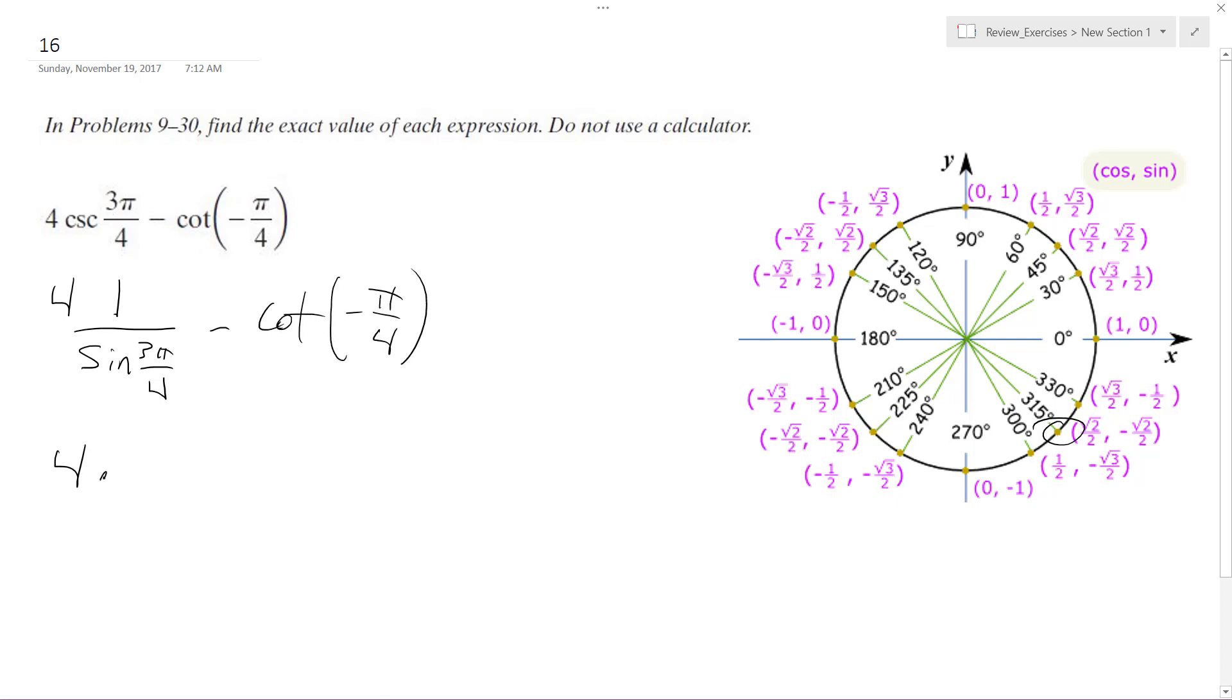So this is 4 times 1 over, the sine of 3 pi over 4 is going to be root 2 over 2, and then this is just negative 1, so 4 times 2 over root 2 plus 1.